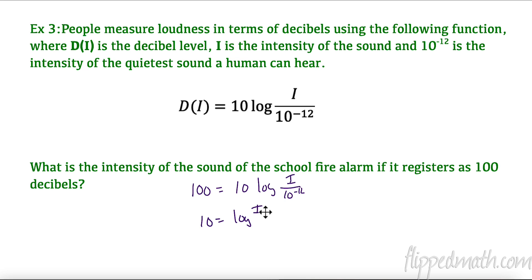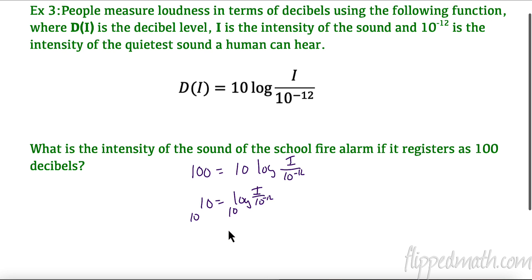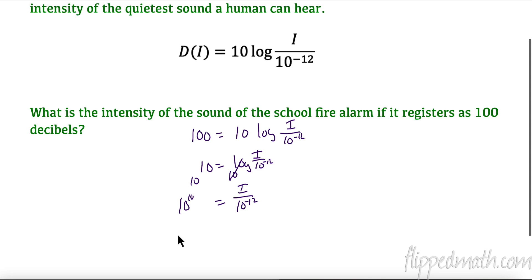That equals log of i over 10 to the negative 12. This is a common log so I can raise both sides to base 10. I'm going to leave this here, 10 to the 10th equals, now all of this is gone and I have i divided by 10 to the negative 12. The opposite of dividing by 10 to the negative 12 is multiplying, so now I have 10 to the negative 12 times 10 to the 10th equals i. If you remember your exponent rules, when I have the same base I add the exponents, so that's 10 to the negative second, which is the intensity or 0.01. So 10 to the negative second versus 10 to the negative 12, quite a bit more intense. I know it sounds like a small number but it is quite a magnitude more. It's quite louder.